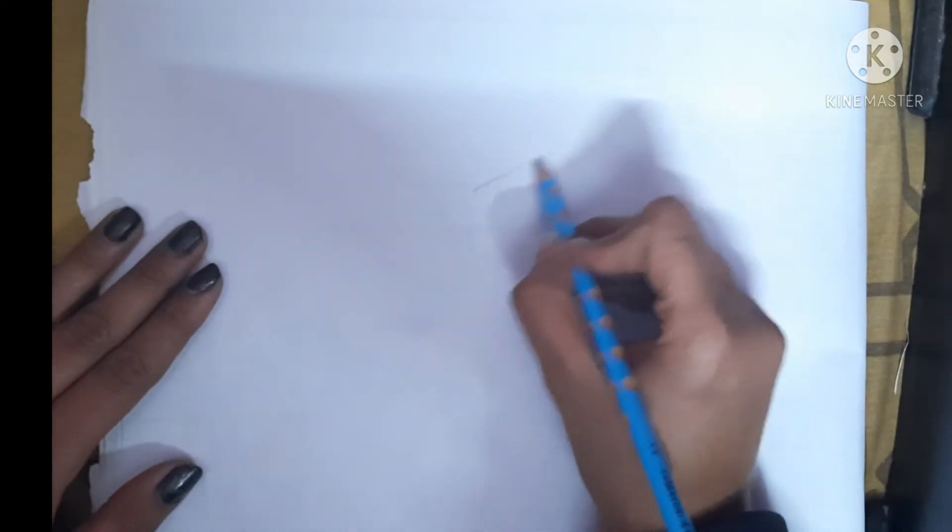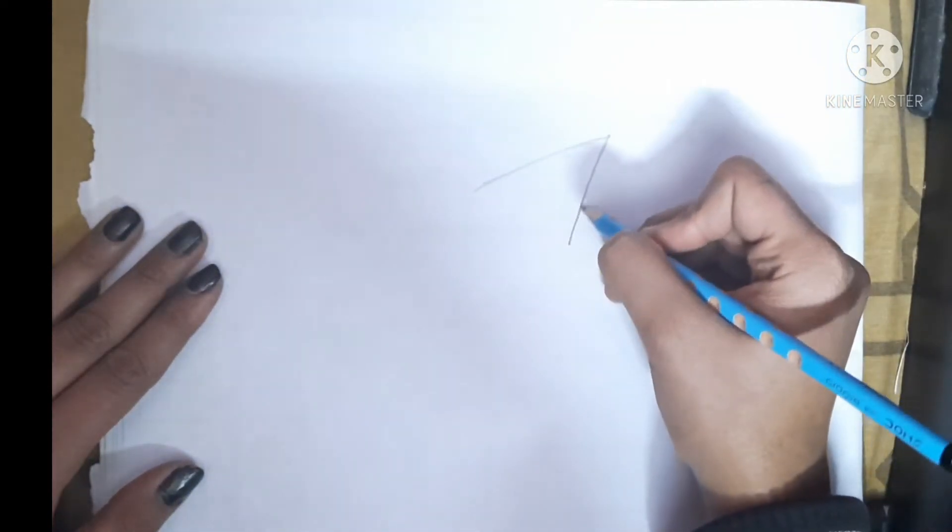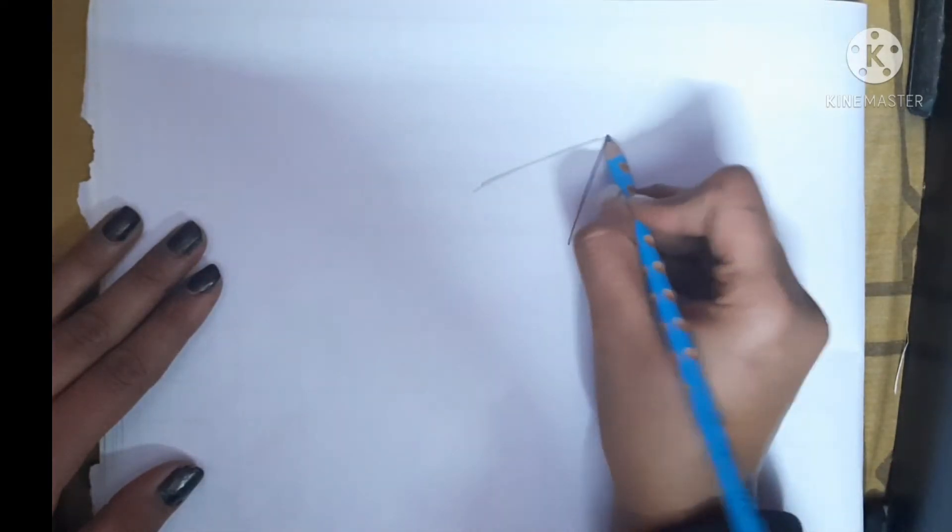Hello students, in today's video we are going to make a rocket and the scenery of the night sky. So let's begin. First, for making a rocket, you have to make a triangular shape like this, two sides of a triangle like this.